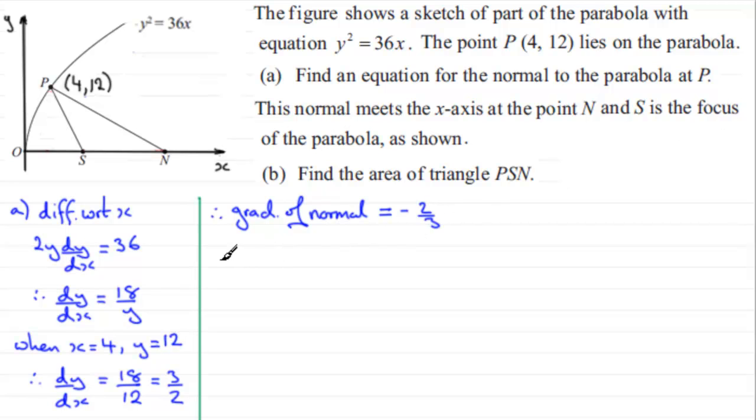And so therefore that now allows us to give the equation of the normal. So I'll just put a little subtitle here, therefore equation of normal at P. What is it going to be? Well, using y minus y₁, it's going to be y minus 12 equals m, which is minus 2 thirds, multiplied by x minus x₁, and that's going to be x minus 4 then. So it said find an equation for the normal to the parabola at P, so that's an equation.